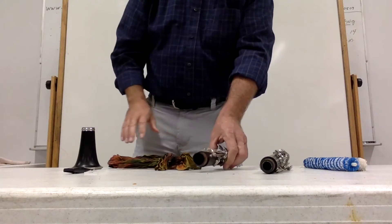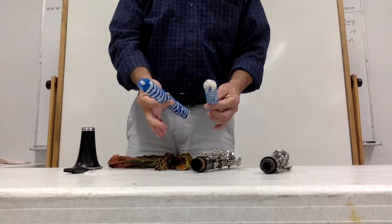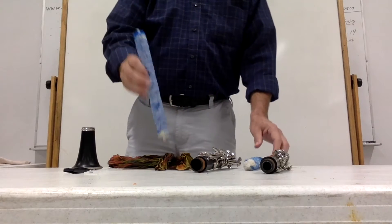Now that is one way of doing it. Another way is what is called pad savers. These are about $15 for a set for a clarinet. And you can do that.